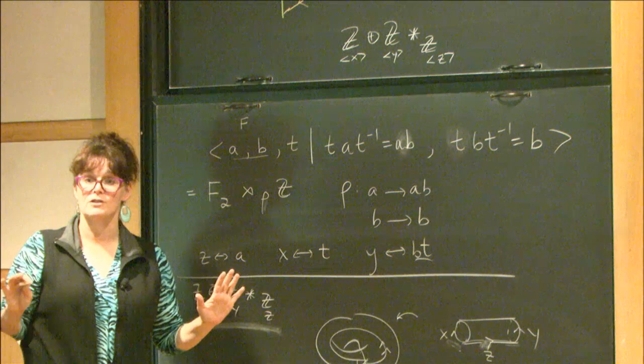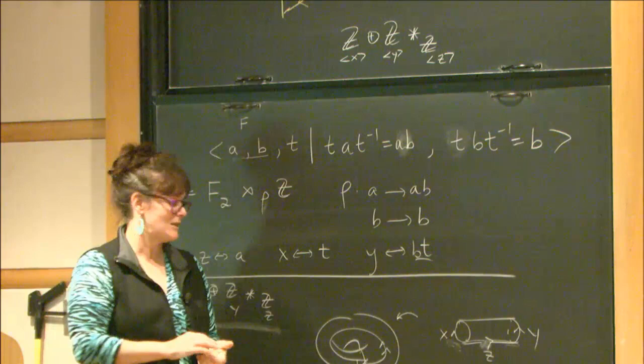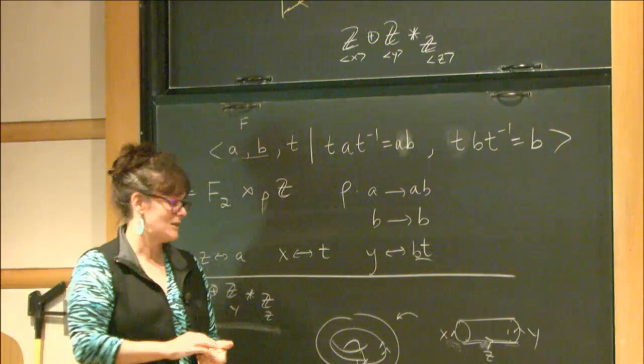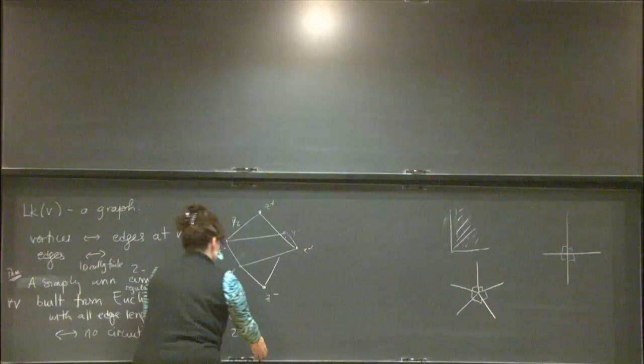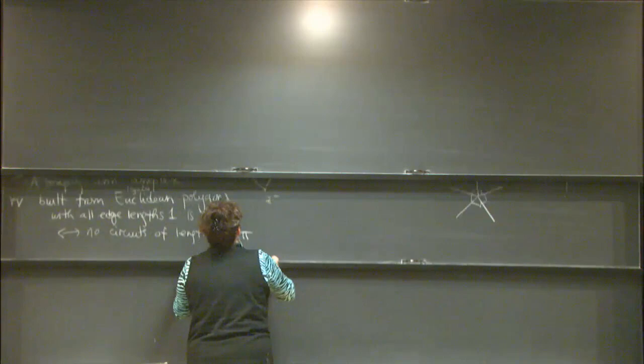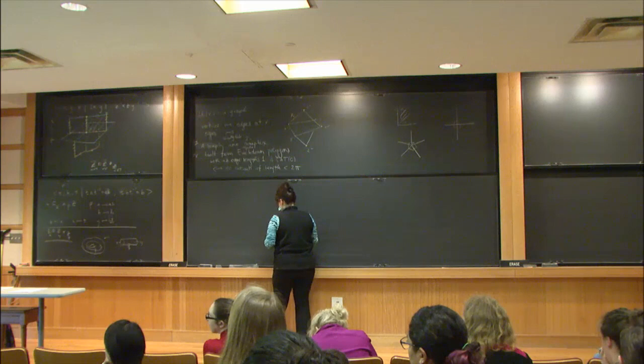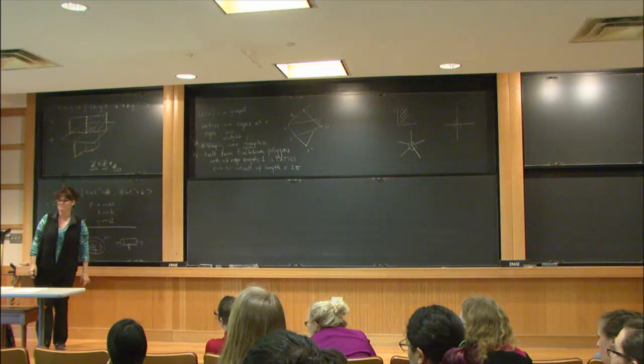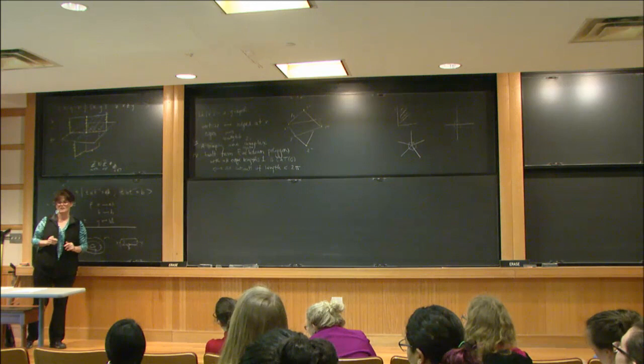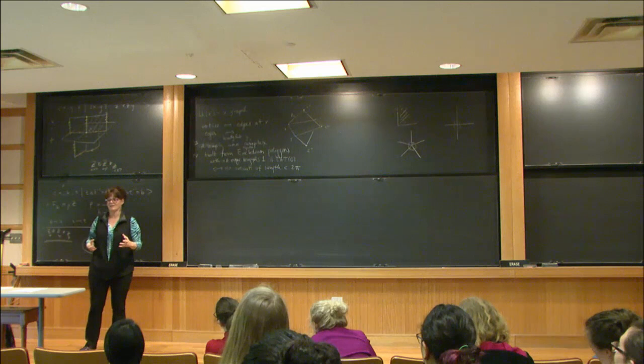Trees are also two-dimensional CAT(0), which means you can draw pictures. The other presentation I showed — via the semi-direct product rewriting — is the mapping torus of that automorphism. It's not true that if you take a group with a presentation that gives a CAT(0) space and then take another presentation, the new presentation complex will also be CAT(0). You're lucky to get even one presentation whose presentation two-complex is CAT(0); it's rare.